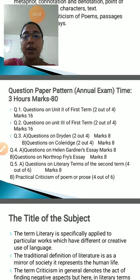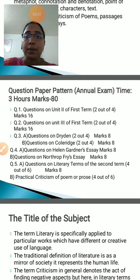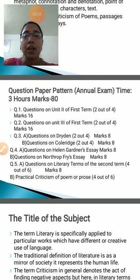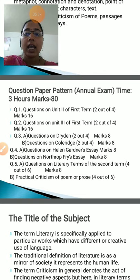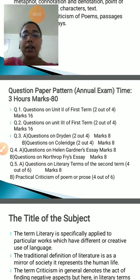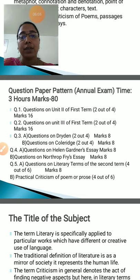Question number five A would be on literary terms from the second term's syllabus. There would be six literary terms and out of six you will have to write four. Question number five B would be on practical criticism of a poem or prose — six questions, out of which you will have to write four.